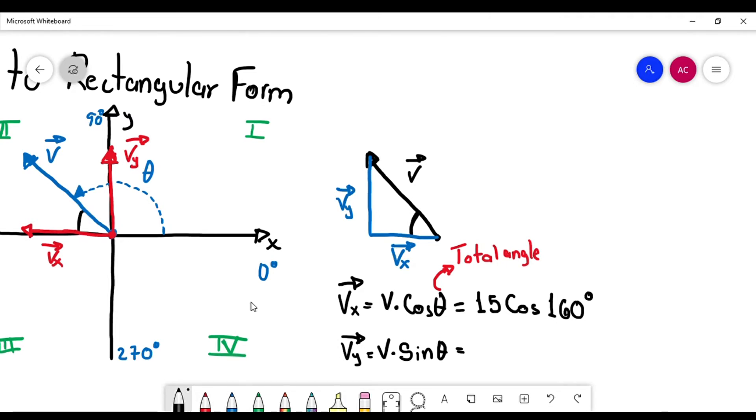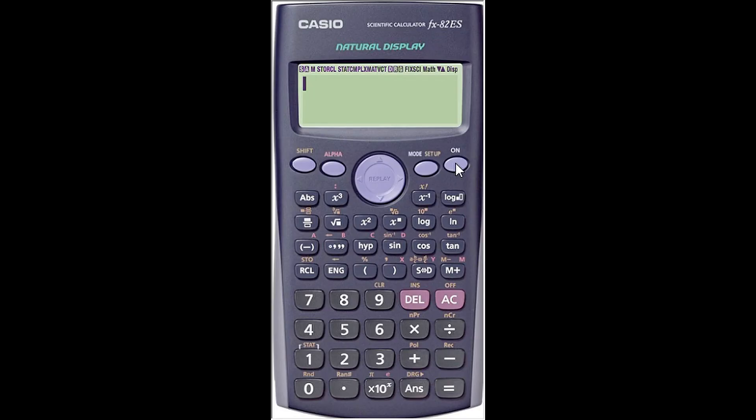And Vy is 15 times the sine of 160 degrees. Okay, let's do it in a calculator. So right here, I got my virtual calculator. So I'm going to perform these operations. Make sure you have your calculator at hand.